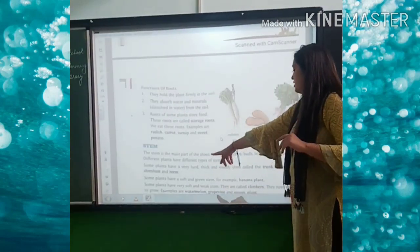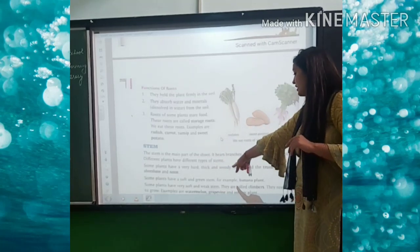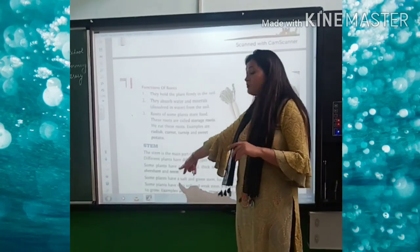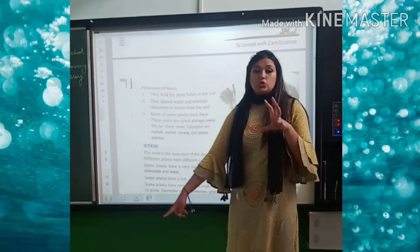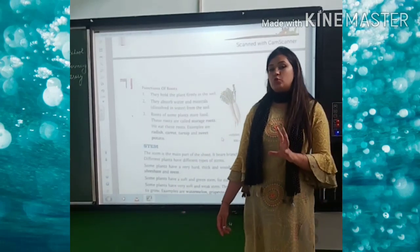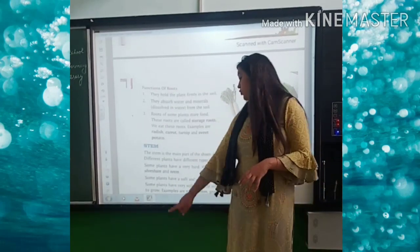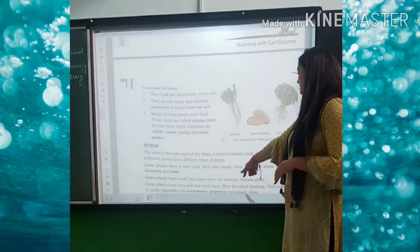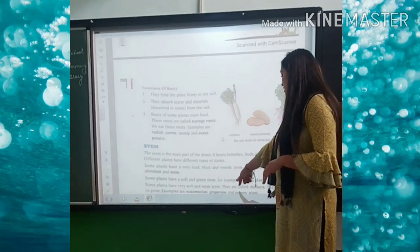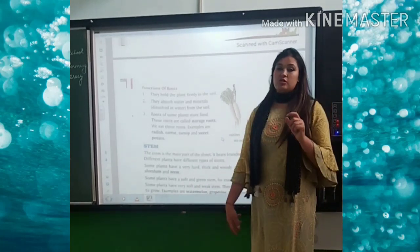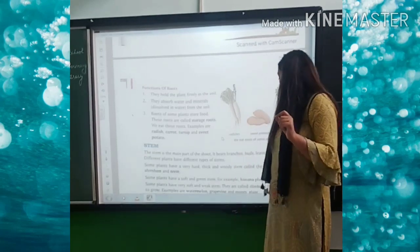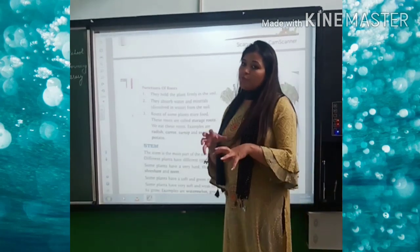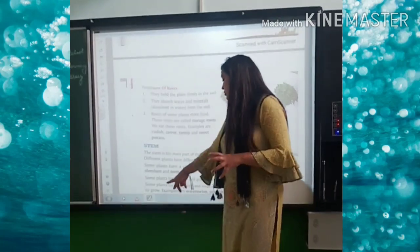Some plants have a very hard and thick stem, which is called trunk. Examples are shisham and neem. Some plants have a soft and thick stem — for example, banana plant — the stem of a banana plant is very soft.